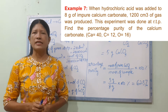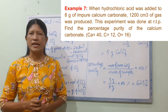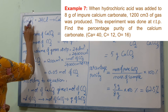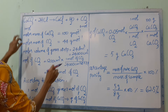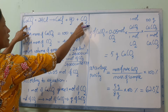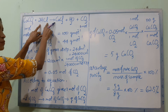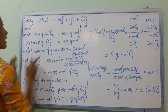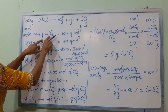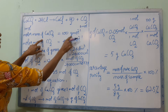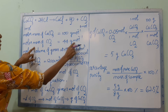For the next example, calcium carbonate (CaCO3) reacts with hydrochloric acid to produce CO2 and water. The compounds include CaCO3, CO2, and H2O. The molar mass of calcium (Ca) is 40, and CO2 has a molar mass of 44 grams per mole.